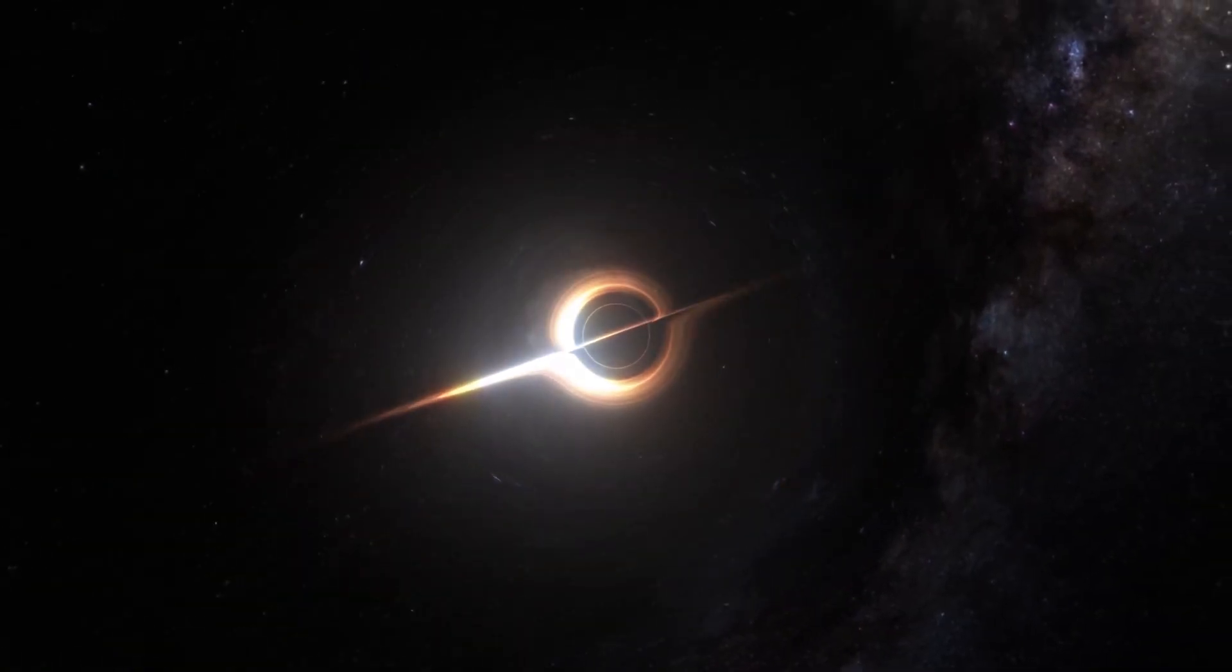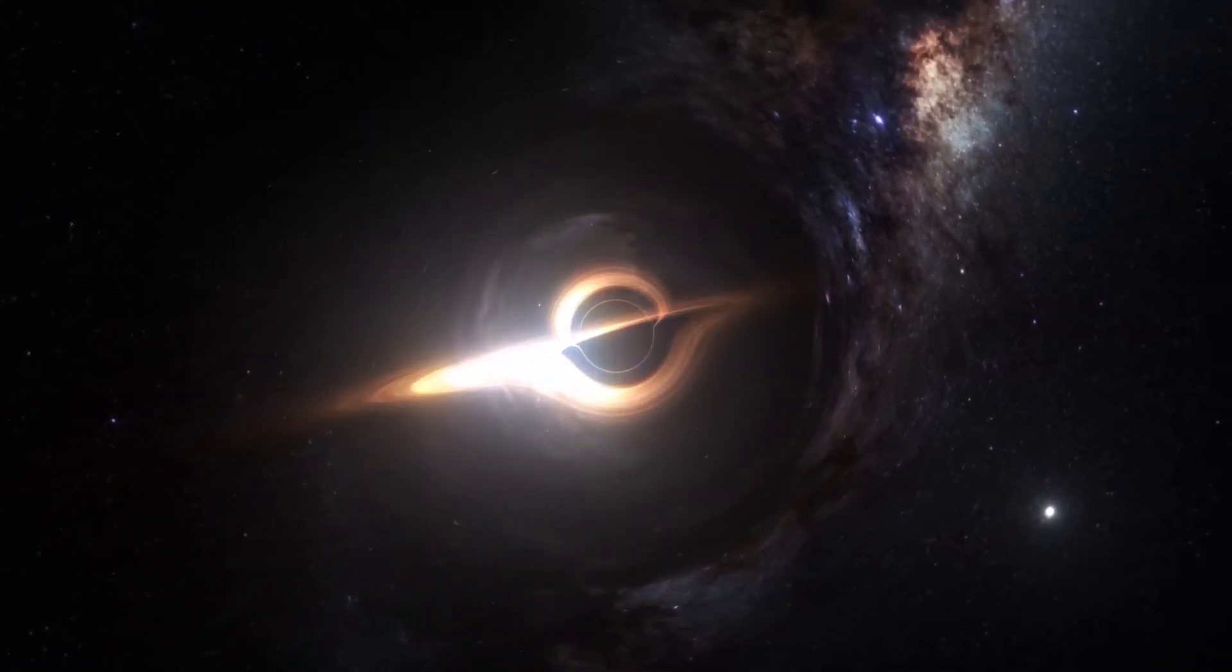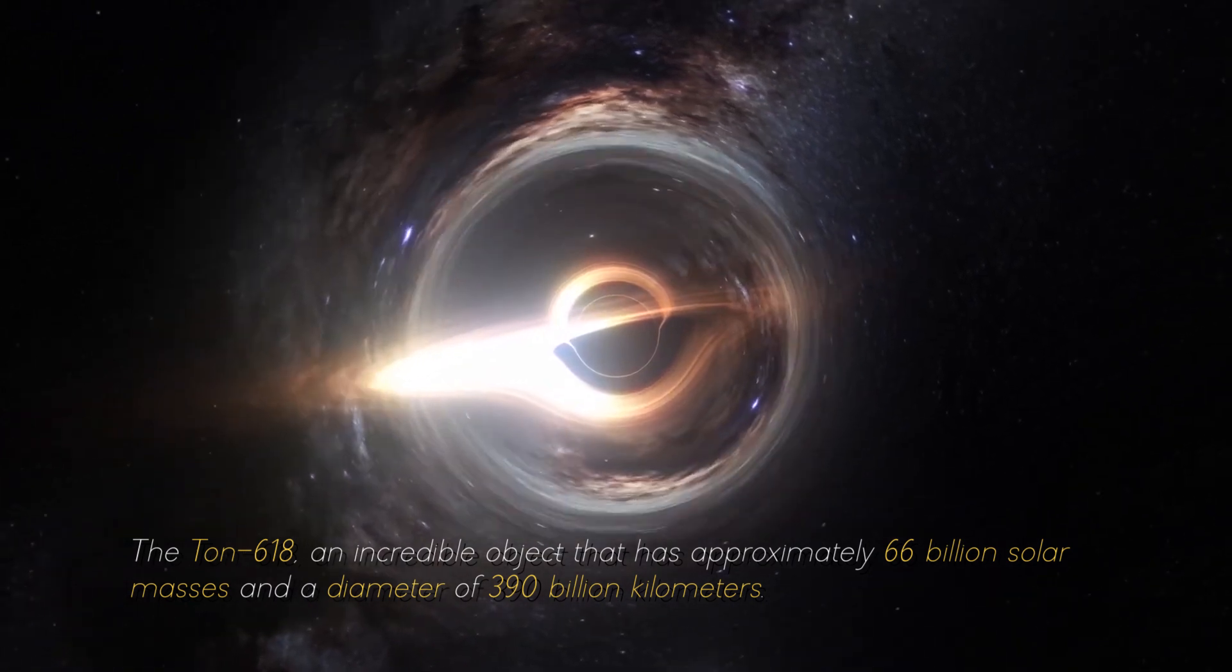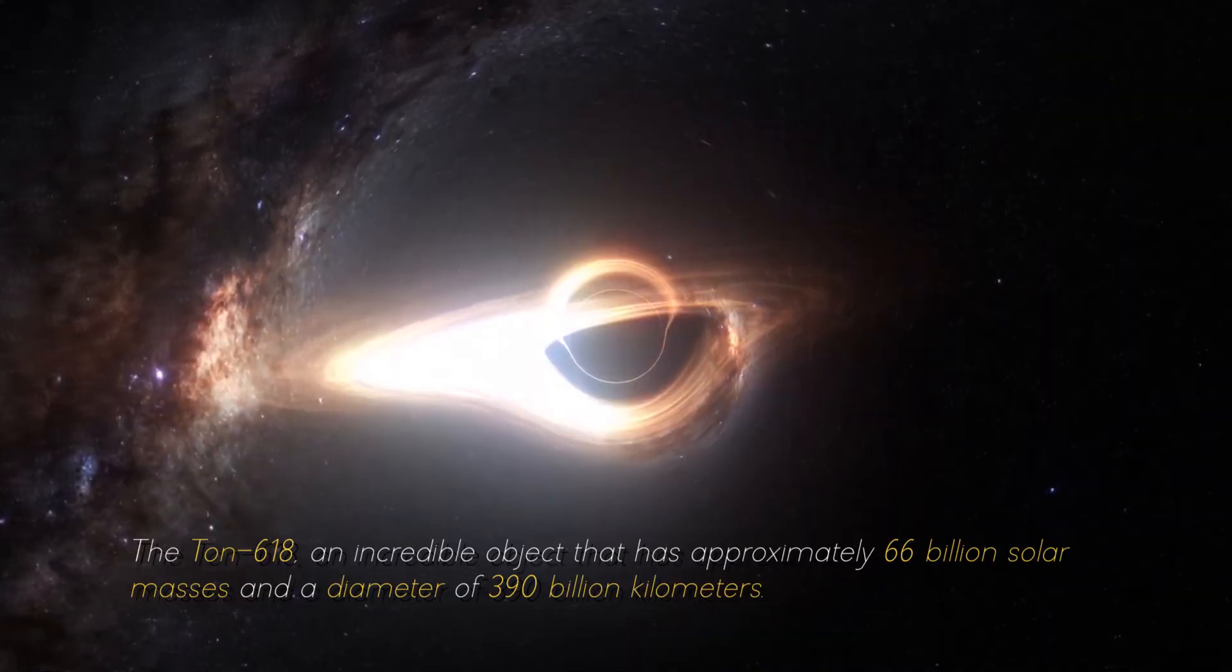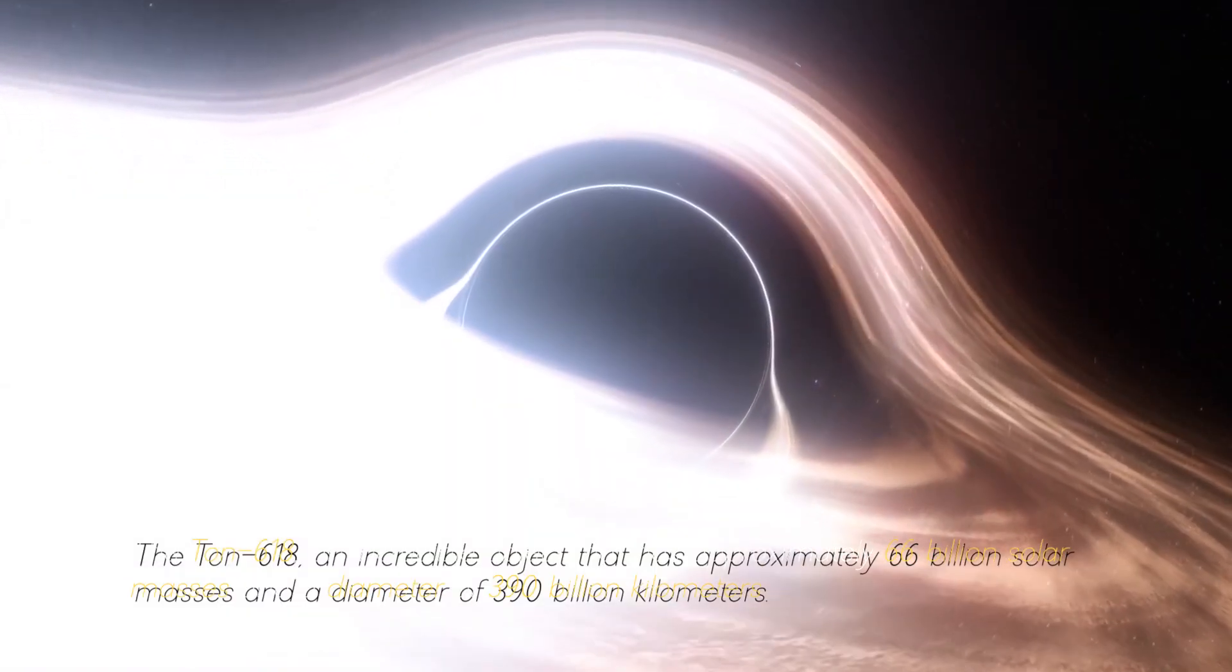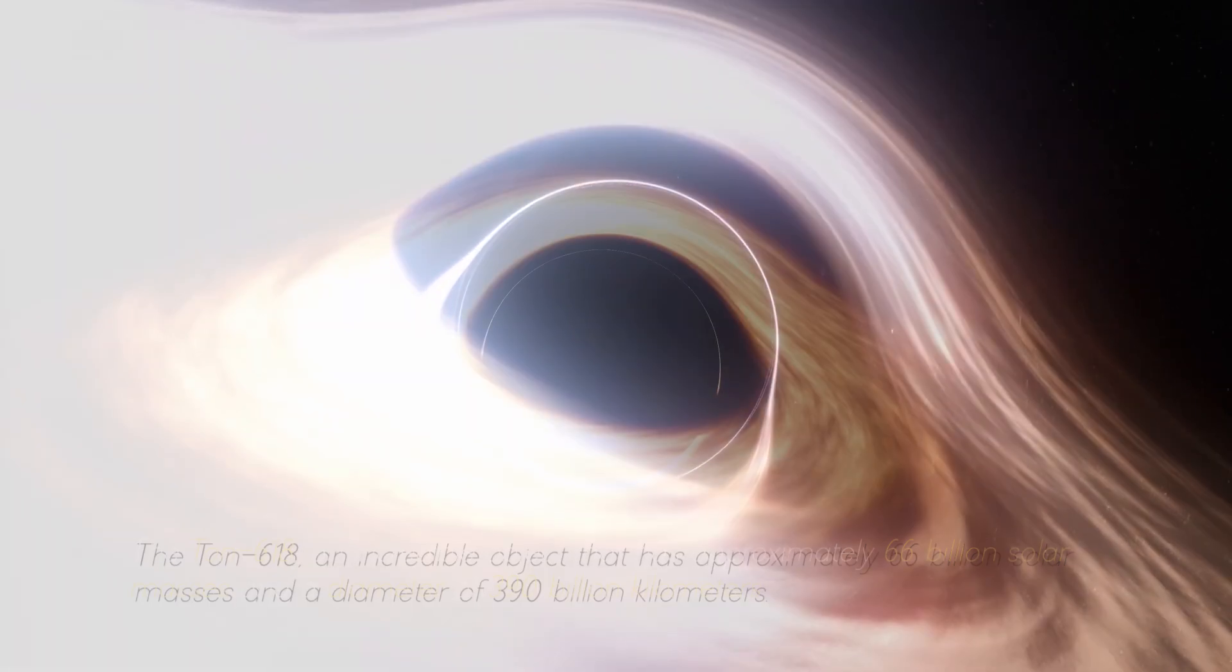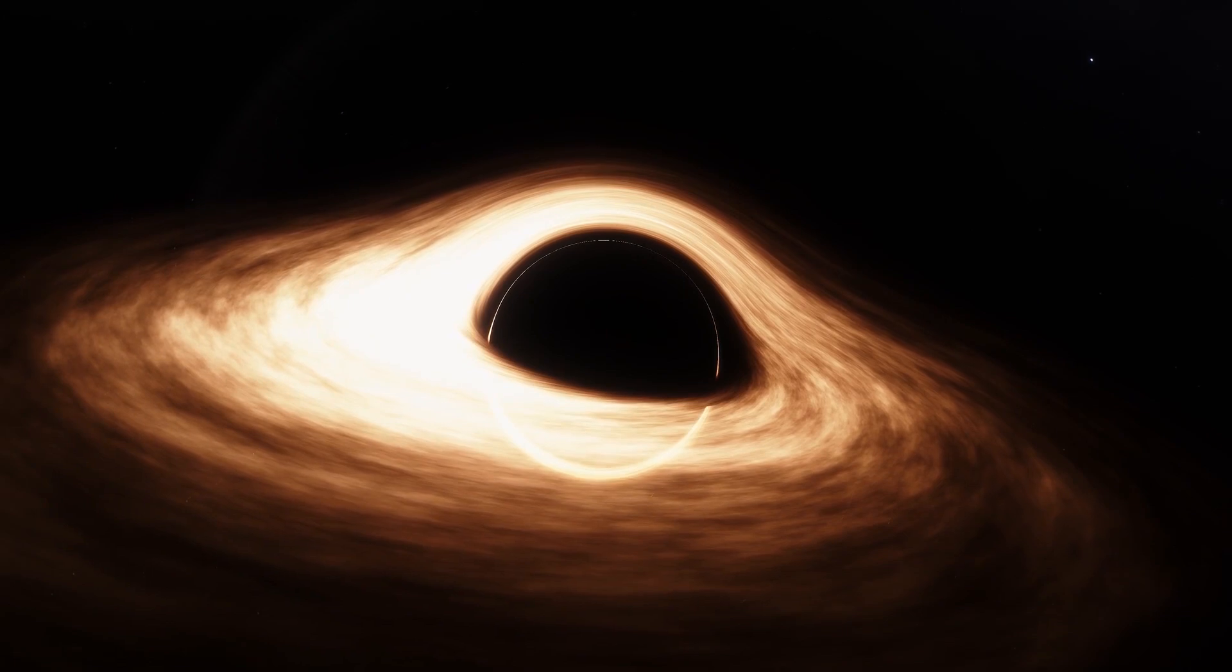Not everything ends here. This star cannot be compared with the most massive black hole in our cosmos, the Ton 618, an incredible object that has approximately 600 billion solar masses and a diameter of 390 billion kilometers. For now, we will stop measuring in kilometers and start measuring in light years.